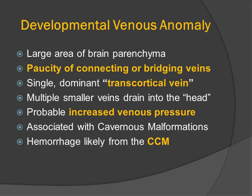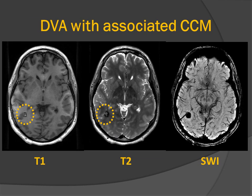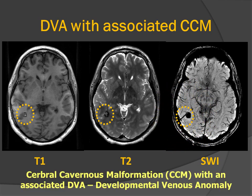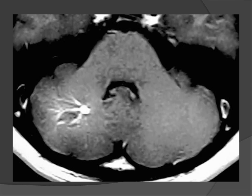Symptomatic hemorrhage is typically related to the CCM and not to the DVA. Our case is fairly typical of an asymptomatic incidentaloma, which is a cerebral cavernous malformation associated with a developmental venous anomaly.